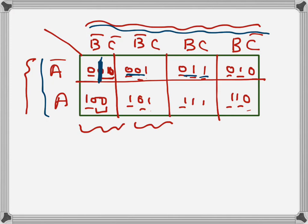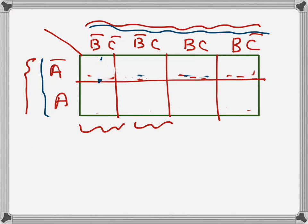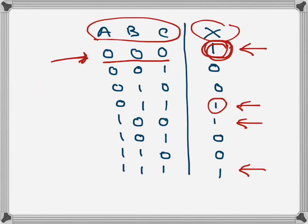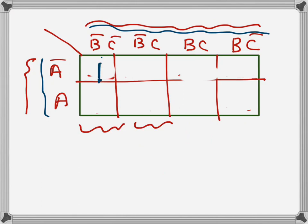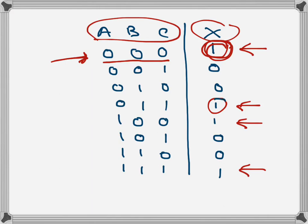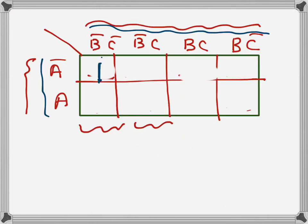I'll erase the helper digits from the cells so it looks less cluttered — we never write those in the K-map anyway. So 0-0-0 goes in the first cell. The next one is 0-1-1, and we can identify 0-1-1 as A-bar B-C because A is zero giving A-bar, and B and C are both one giving B-C.